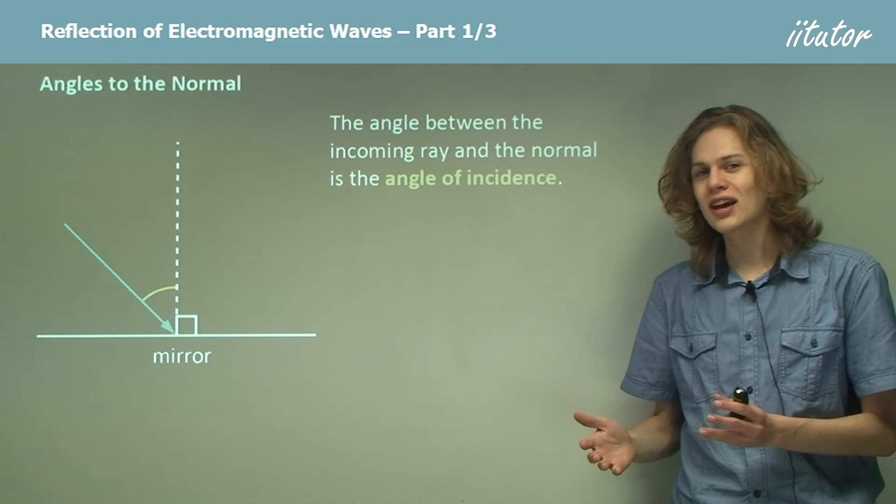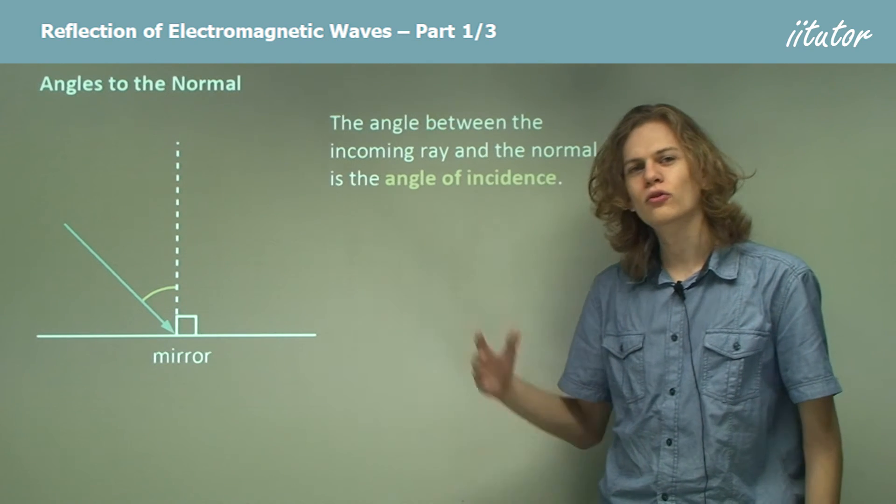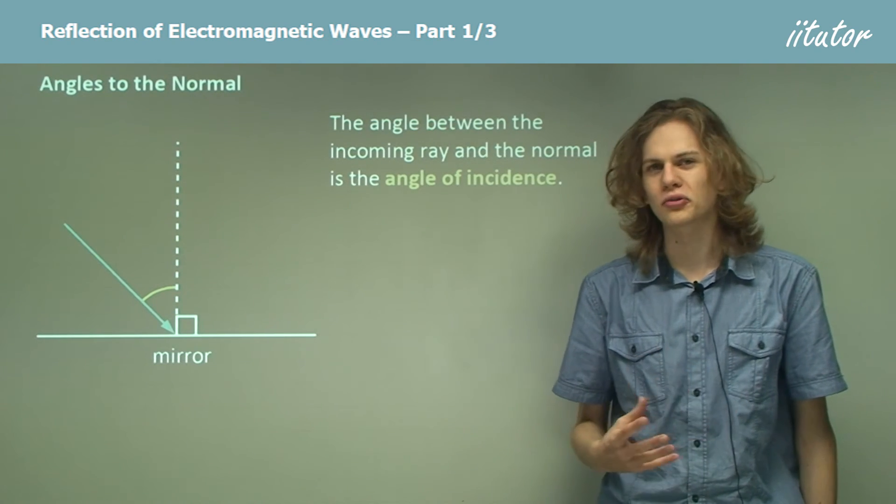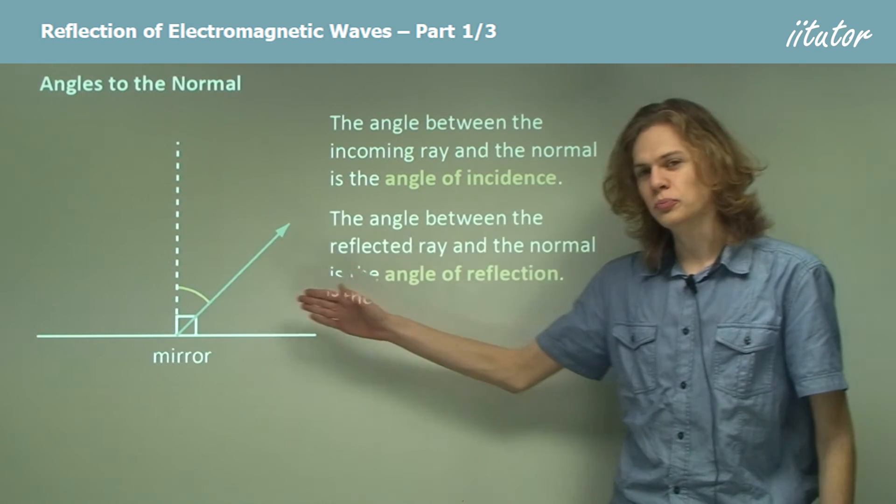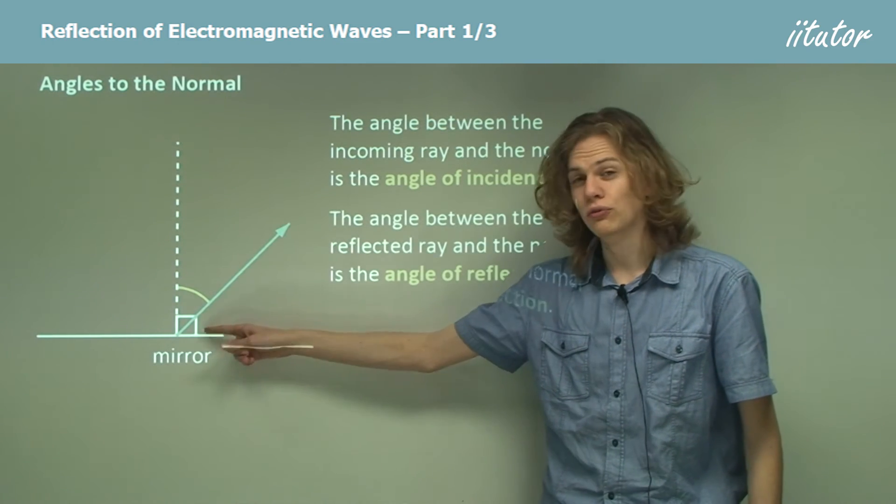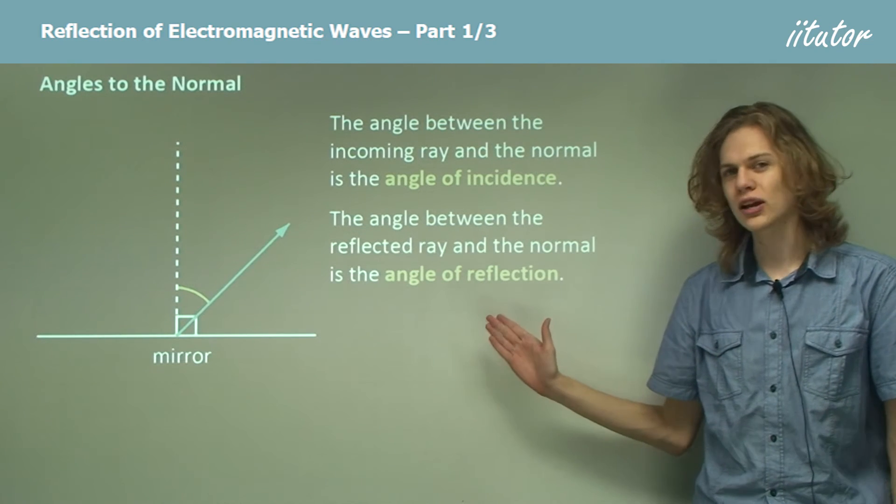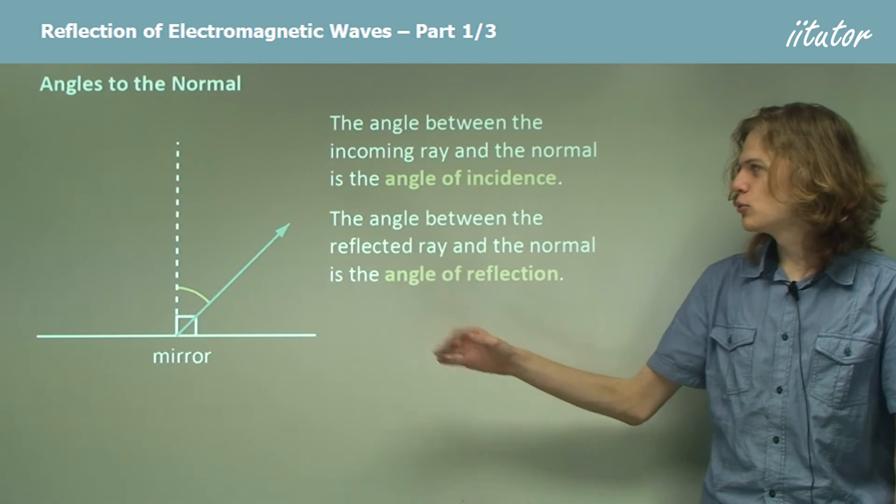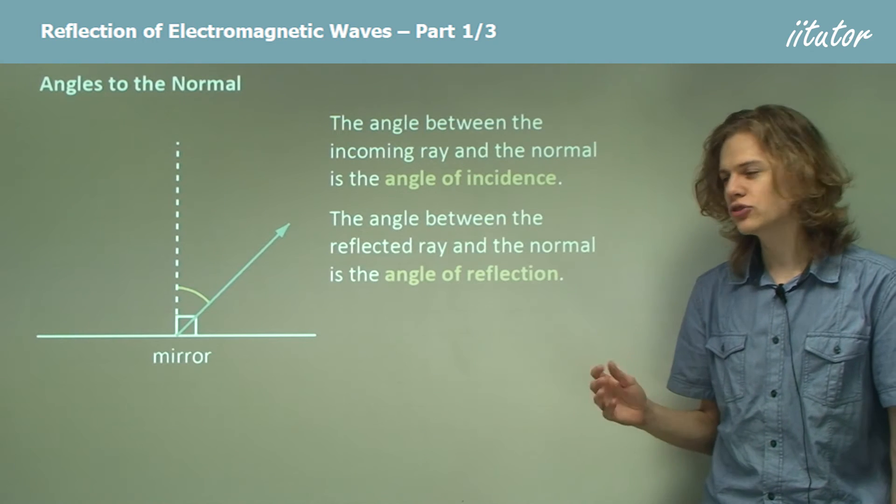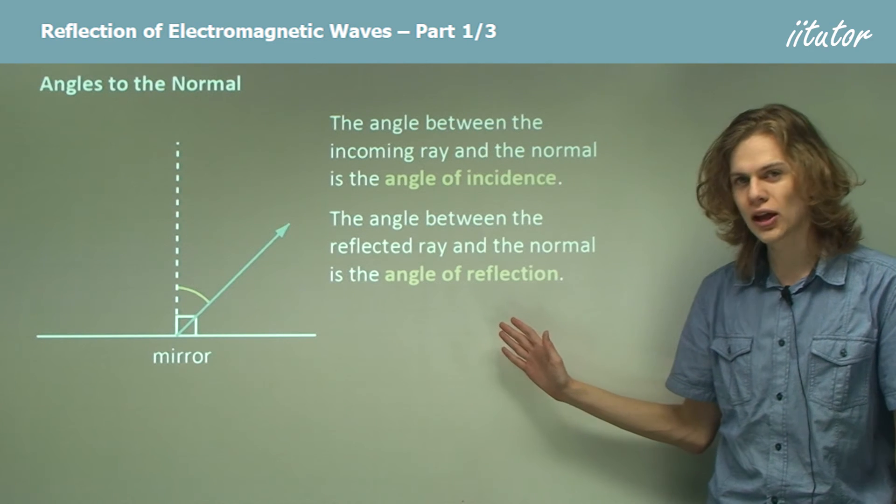And so, as I'm sure you can guess, we can have a similar angle for once it's bounced off the mirror, or the boundary. When it's been reflected, then the angle between the reflected ray and the normal is called the angle of reflection. So on the left side, we have the angle of incidence, and on the right side, we have the angle of reflection.